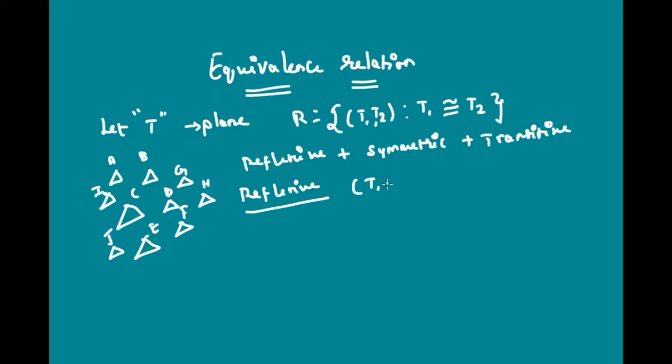If I take two triangles that are both one and the same, that is T1, T1, it is obvious that T1 is congruent to T1 because every triangle is congruent to itself. For instance, if I take triangle A and compare triangle A with triangle A itself, obviously triangle A is congruent to triangle A. So thus it is reflexive.